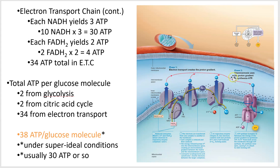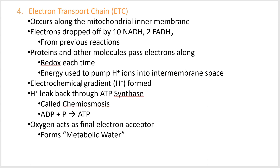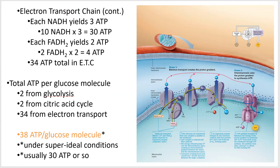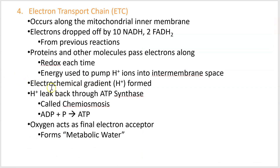Lots of positively charged hydrogens are stuffed into the inter-membrane space — they repel each other and want to escape, but can only exit through one channel: ATP synthase. That electrochemical gradient drives them to diffuse back through ATP synthase, which synthesizes ATP. That specific process of hydrogen ions leaking back through ATP synthase is called chemiosmosis.